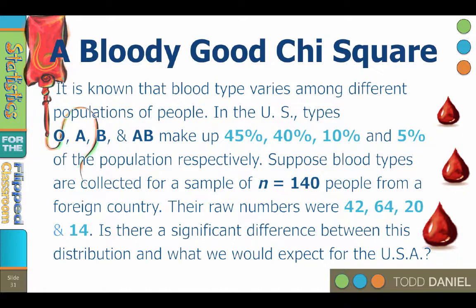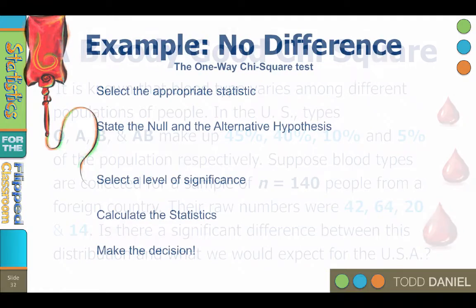We will begin with the five steps of hypothesis testing. Step number one, select the appropriate statistic. We are comparing proportions from an obtained sample to what we expect to find based on the distribution in a comparison population. So we will use the one-way chi-square goodness of fit test for a no difference situation.